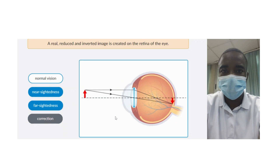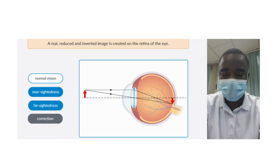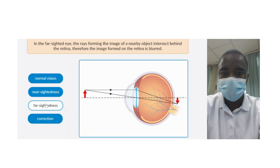Farsightedness, or hyperopia, is another common vision disorder where the eye is too short or the cornea is not curved enough, causing light to focus behind the retina rather than on it. The simulation helps students understand the causes and effects of farsightedness, including how it affects vision and how it can be corrected with convex lenses or laser surgery.